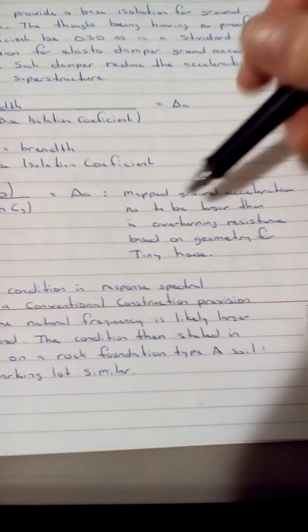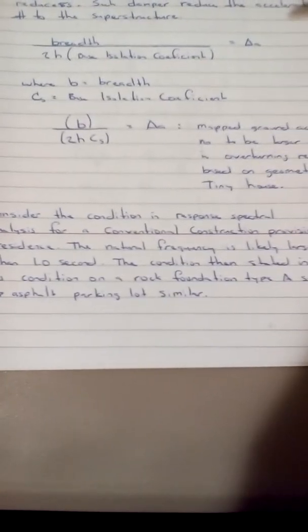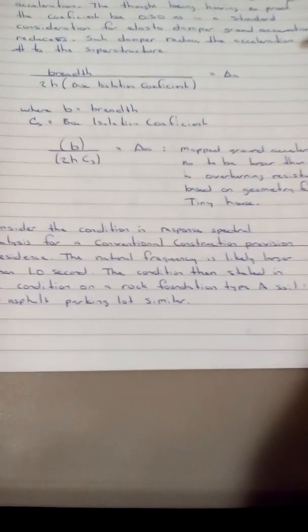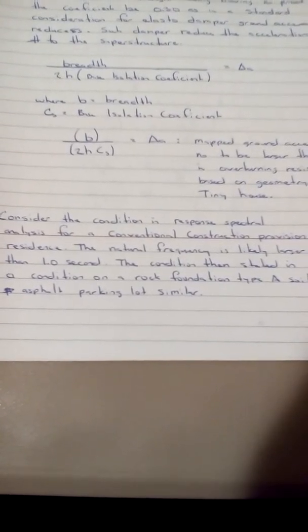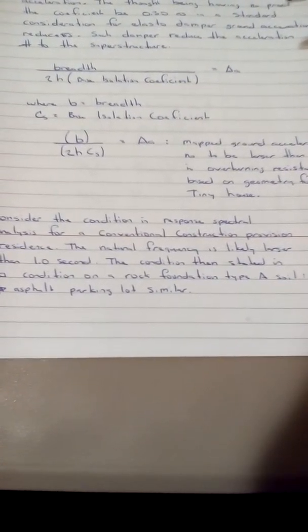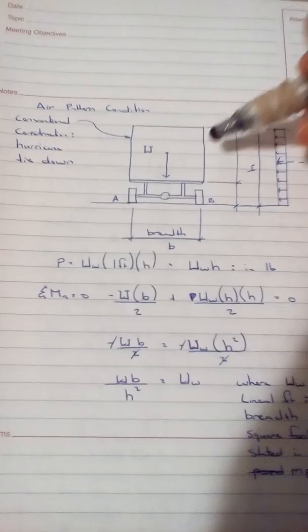For the conventional construction provision, the natural frequency is likely larger than 1.0 second. The condition is stated on a rock foundation — Type A soil, similar to an asphalt parking lot condition. Here we have our air pattern (wind) condition and the conventional construction hurricane tie-down consideration to keep the structure from falling off its trailer.